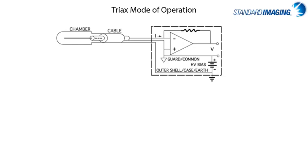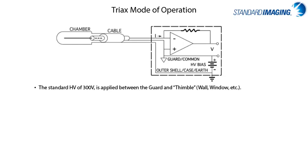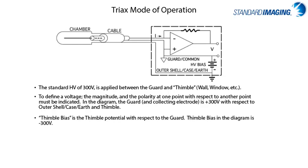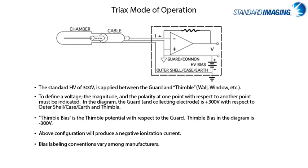Putting this all together, if we consider the chamber, cable, and electrometer as a system, the standard high voltage of 300 volts is applied between the guard and the thimble. The magnitude and polarity at one point with respect to another must be indicated: the guard and collecting electrode are at plus 300 volts with respect to the outer shell and earth, while the thimble bias is at negative 300 volts with respect to the guard. This configuration produces a negative ionization current. With Standard Imaging electrometers, when a negative bias is applied, there is a negative charge on the collector and therefore positive ions are collected.